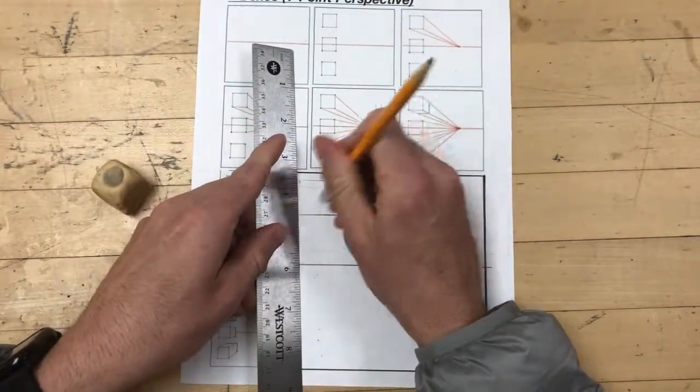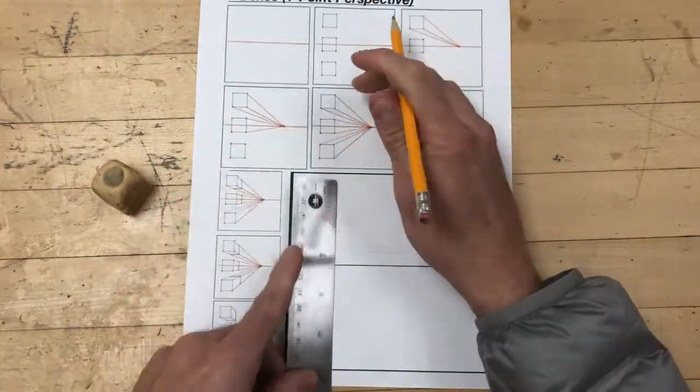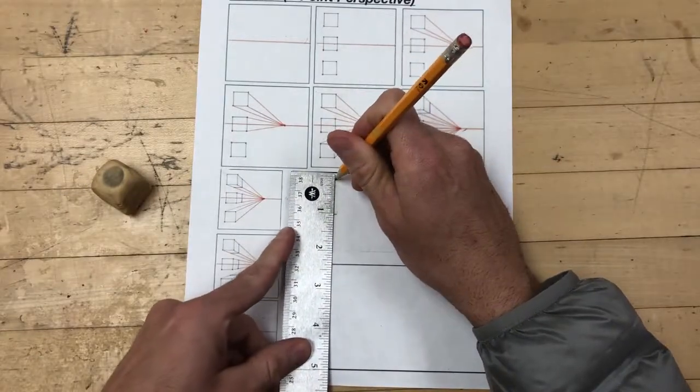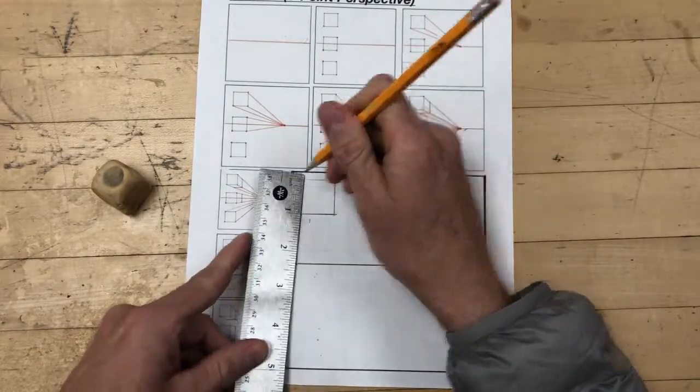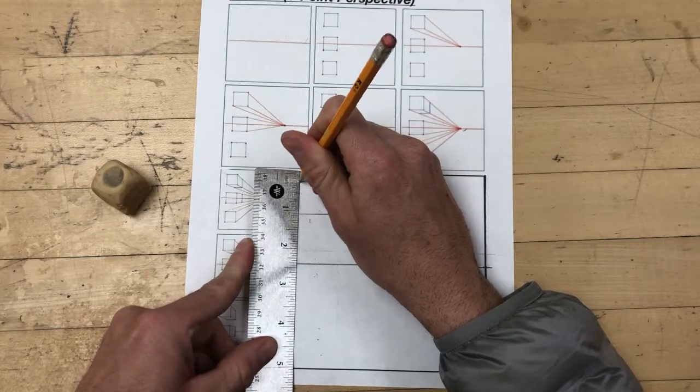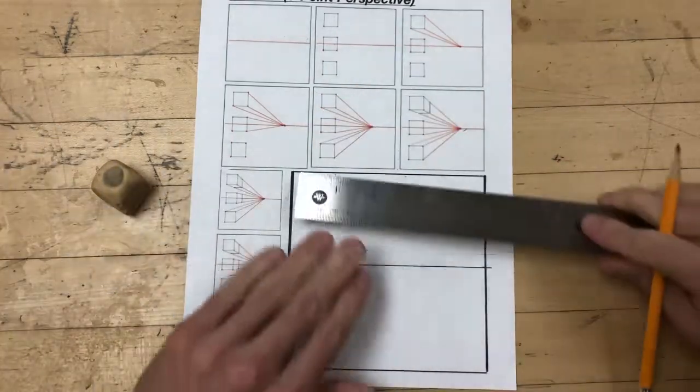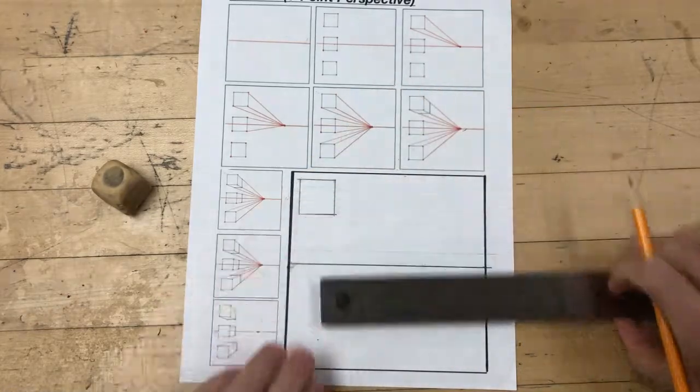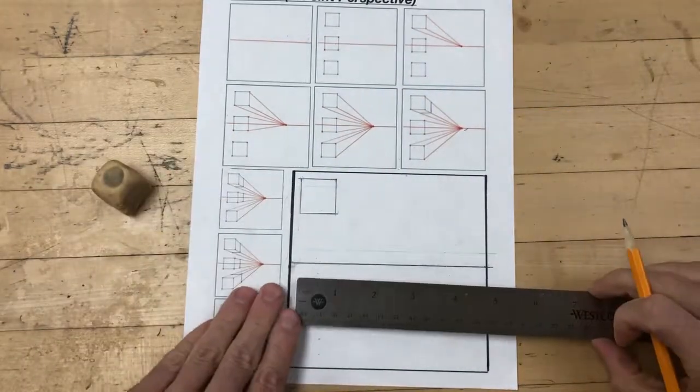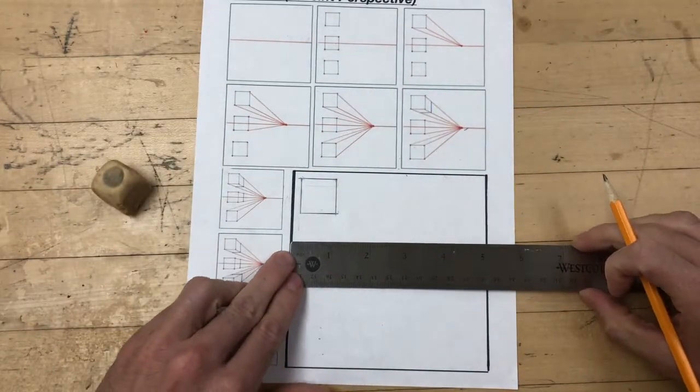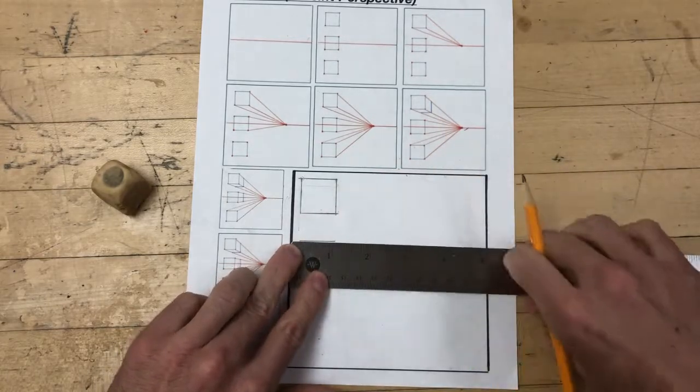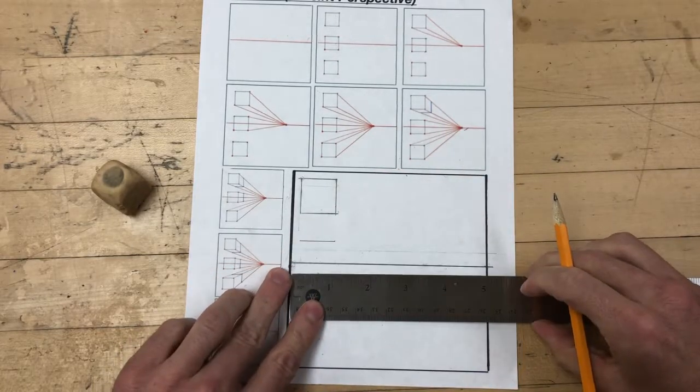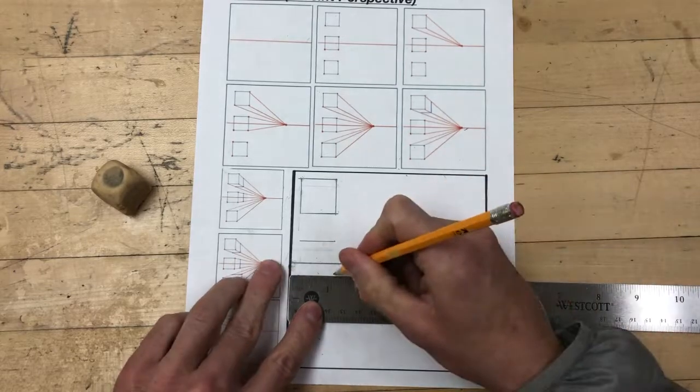I have to reiterate, I am drawing a little bit darker so students can see the marks better on the screen. I'm going to draw a box directly on top of the horizon line approximately one inch in size.